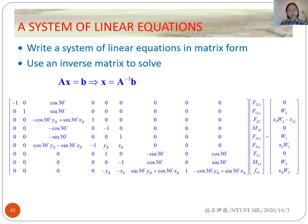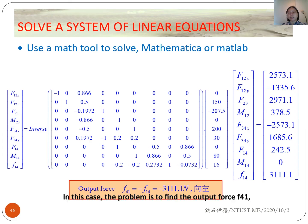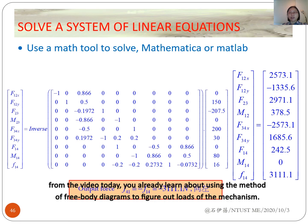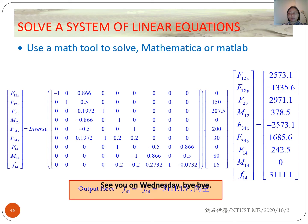Nine equilibrium equations are written as a system of linear equations in matrix form. After substituting all the values into the matrix, you can solve all unknowns using a math tool. In this case, the problem is to find the output force F41, so we flip the direction of force F14 to obtain it. From today's video, you have learned how to use the method of free body diagrams to find the forces of a mechanism. I hope you watch the video and read the textbook before class. See you Wednesday. Bye-bye.